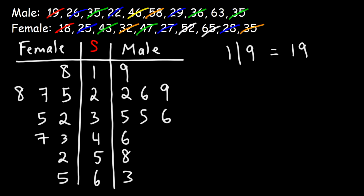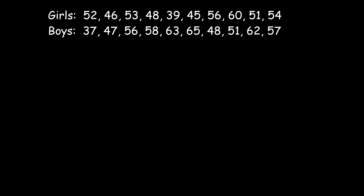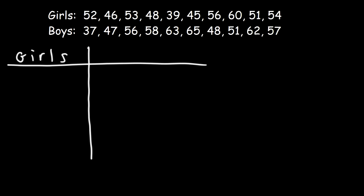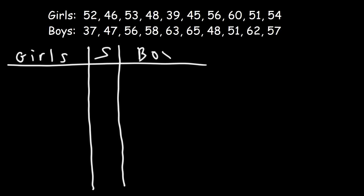So that's how you can make a side-by-side stem and leaf plot. For the sake of practice, let's try another example — feel free to pause the video if you want to work it out yourself. What we have here are the heights of girls and boys in a typical class. We're going to make three columns: one for girls, one for the stem, and one for boys.